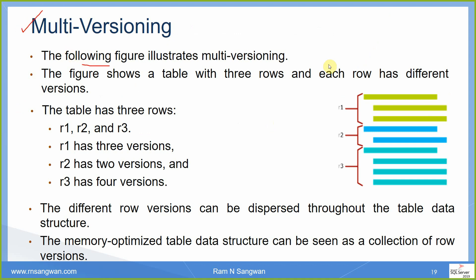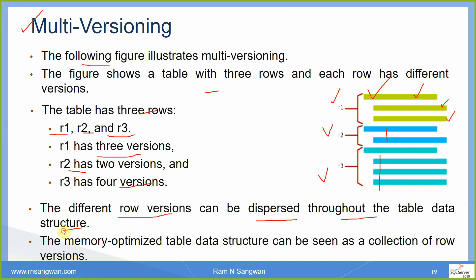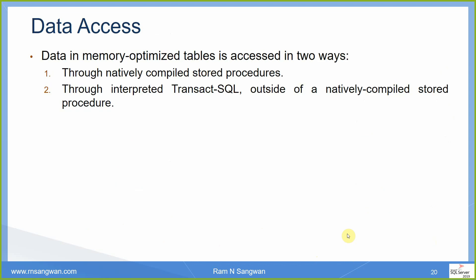Multiversioning: we may have different versions of the same row — the same concept exists in Oracle. For example, a table with three rows R1, R2, and R3: R1 has three different versions, R2 has two versions, and R3 has four versions. These different row versions can be dispersed throughout the table data structure. A memory-optimized table can be seen as a collection of row versions. Data in a memory-optimized table is accessed in two ways: through natively compiled stored procedures, or through interpreted T-SQL outside of natively compiled stored procedures.